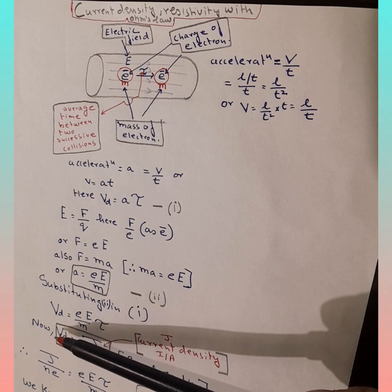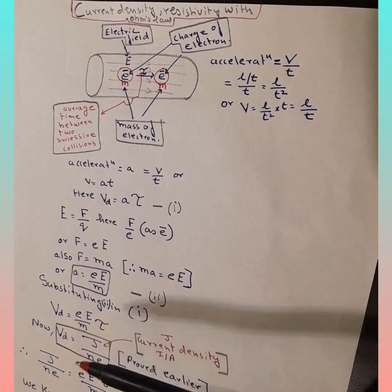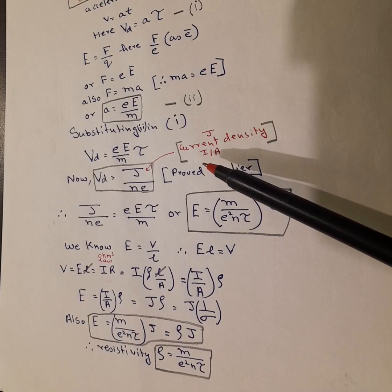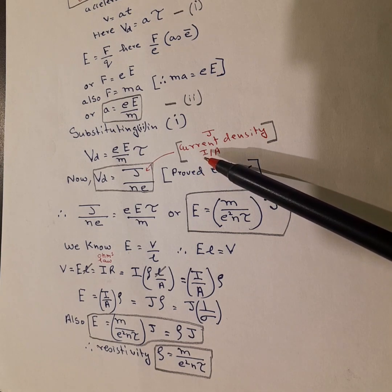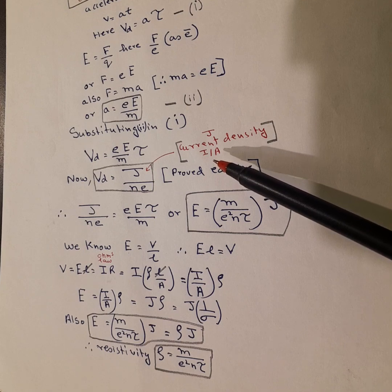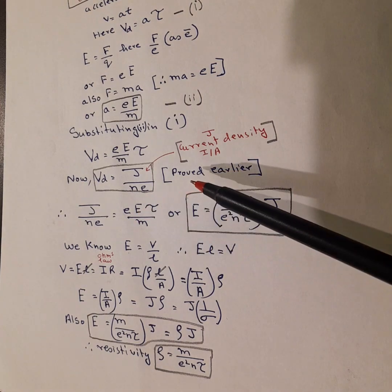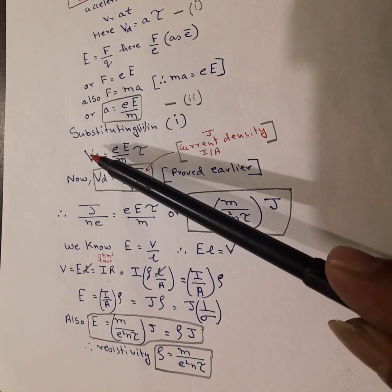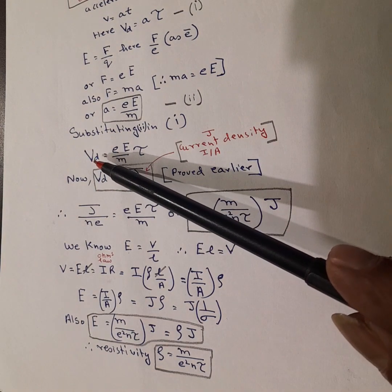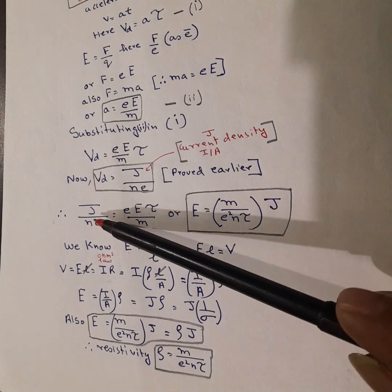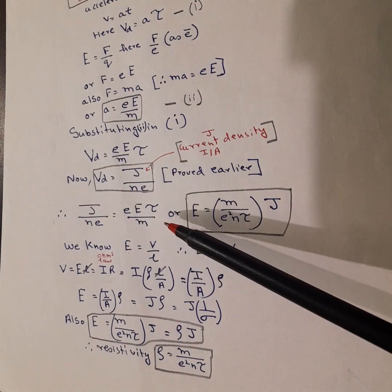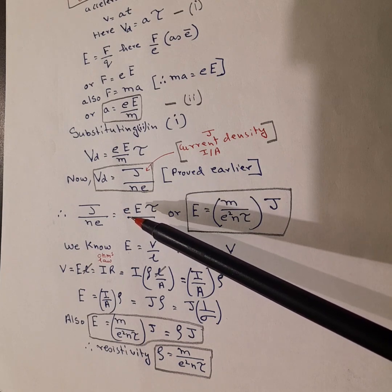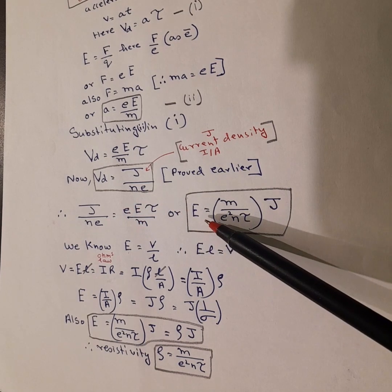The formula for current density J is I over A, where I is ampere for current and meter square for area. This has also been proved earlier. Now if we see this and this, both equations are for drift velocity. So let's equilibrate. So we equilibrate these two equations.